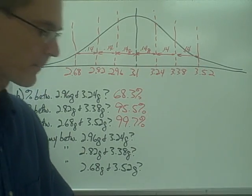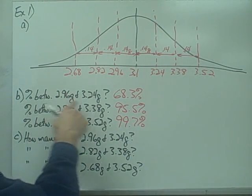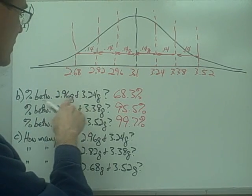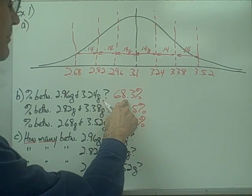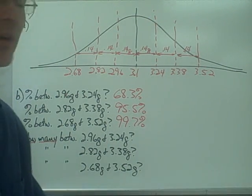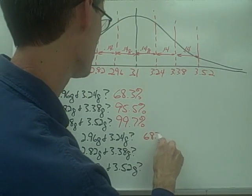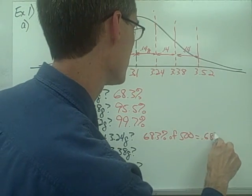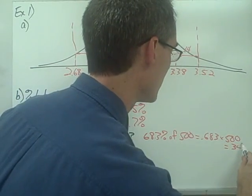Part C asks how many pennies have a weight between 2.96 and 3.24 grams. This is slightly different from Part B — instead of asking what percentage, it asks for the actual number of pennies. If 68.3% of pennies lie between these two values, and I have 500 pennies total, then the number of pennies is 0.683 times 500, which is approximately 342 pennies.